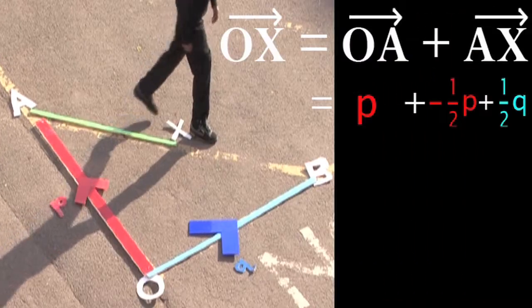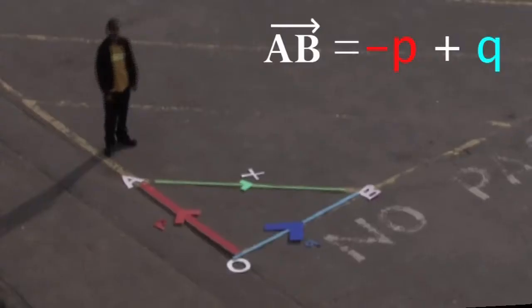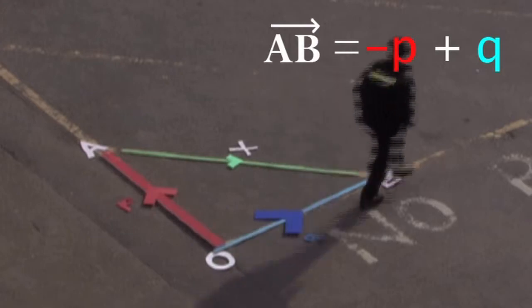To show these two lines are parallel we have to show that they're multiples of each other. We got a to b is minus p plus q. So what's cd?